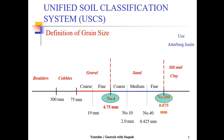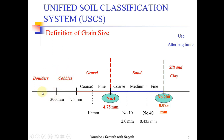Regarding grain size definitions: particles retained on sieve number 4 are termed gravel, cobbles, or boulders. If particle size is between 4.75 mm and 75 mm, the particles are termed gravel. Particles between 75 mm and 300 mm are categorized as cobbles, and particles greater than 300 mm are categorized as boulders.